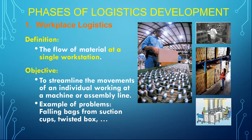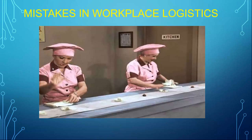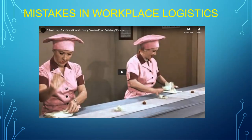Workplace logistics is defined as the flow of material at a single workstation. The objective is to streamline the movement of an individual working at a machine or assembly line. Examples of problems include falling bags from a suction cup, twisted boxes at the end of the line, or backups on a palletizing operation — all of these are problems at the workstation level.